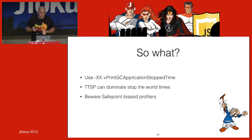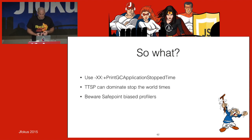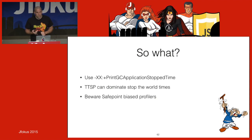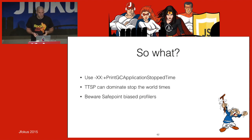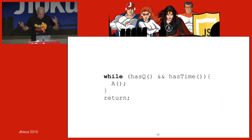Beware safe-point biased profilers: that hot loop will never show up because it's never at a safe point. Use unbiased profilers — Java Mission Control, Zing's ZVision, or the open-source Honest Profiler — which sample the stack without requiring a safe point. Chunk large memory copies. That's everything — thank you.